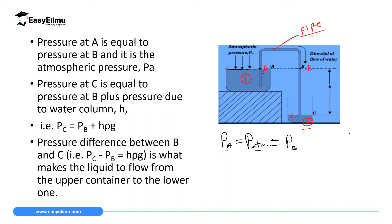If we have a particle at point C, this particle is going to experience two types of pressures. Above this particle, we have height H with liquid above it. So the particle at C will first experience pressure due to the height — that is H·ρ·g. But above this height, at point B, there is still liquid, and the liquid above it exerts pressure equal to pressure at A, which is the same as atmospheric pressure.